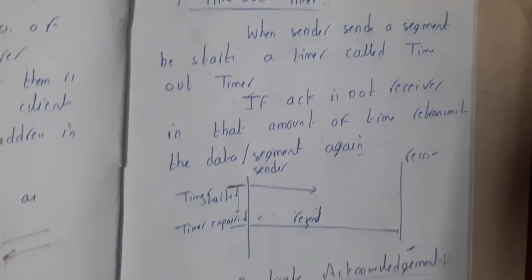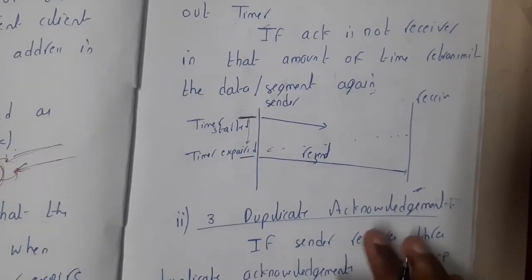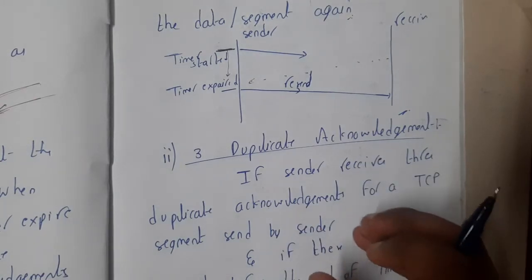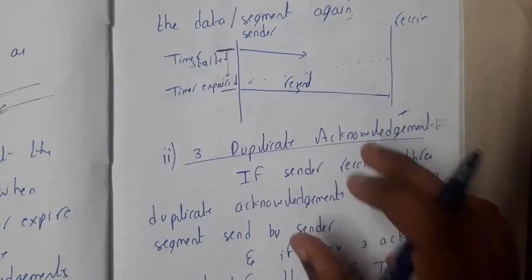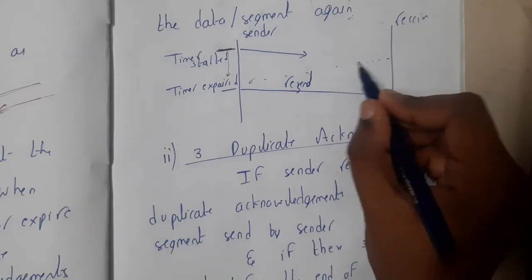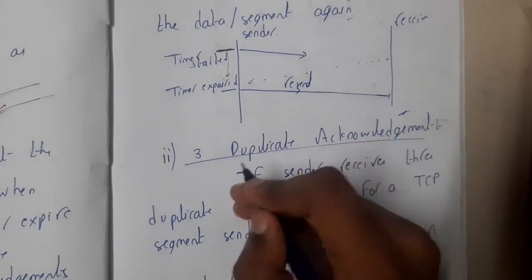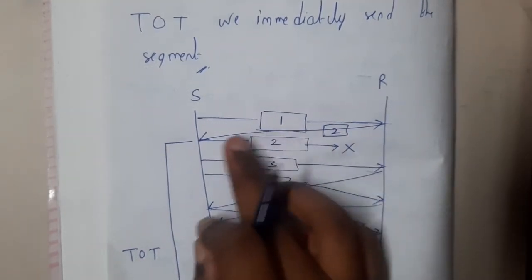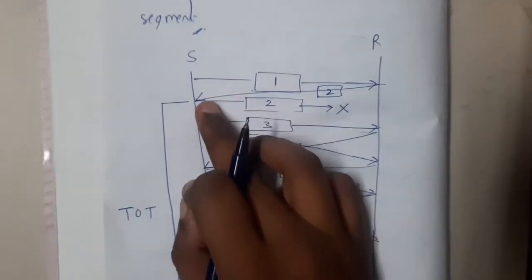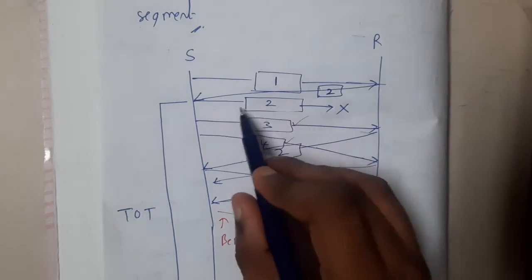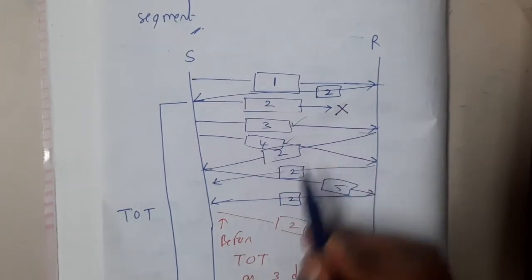The second type of retransmission occurs with three duplicate acknowledgements. When sending multiple segments simultaneously, if one segment is lost, the receiver will repeatedly signal for that missing segment. For example: I send packet 1, the receiver acknowledges and requests packet 2. I then send packets 2, 3, and 4 together, but packet 2 is lost in transit.